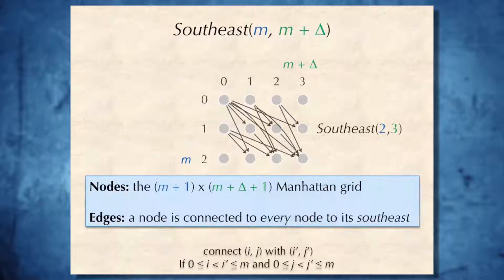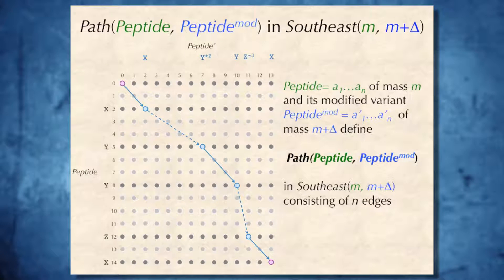Let's start. In the beginning, let's construct first a graph that I call South-East M M plus delta, which consists of a grid with M plus 1 rows and M plus delta plus 1 columns. Edges in this graph will simply correspond to all edges going in the South-East direction. And given a peptide A1 to AN of mass M and its modified variant, peptide mod A1' to AN' of mass M plus delta,